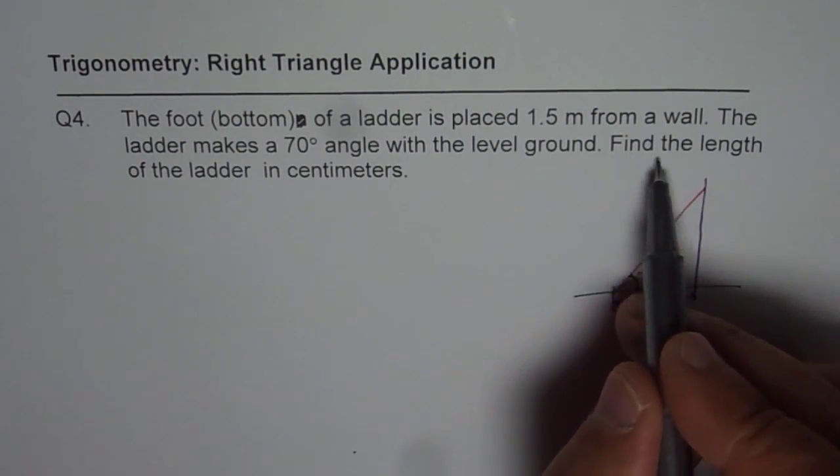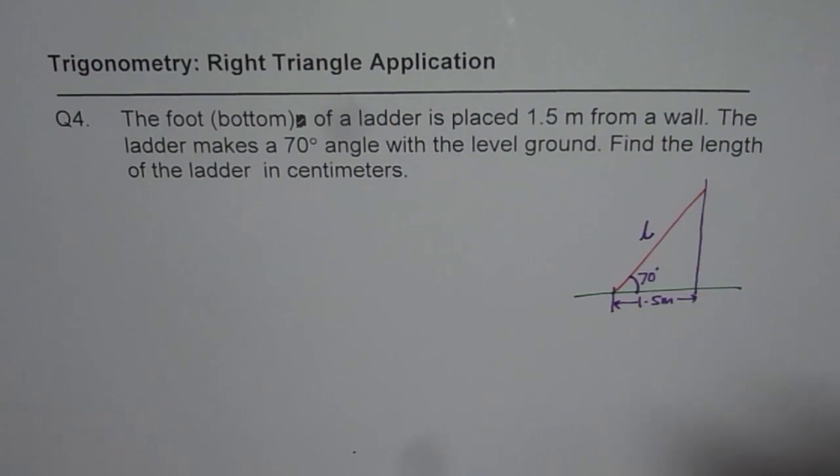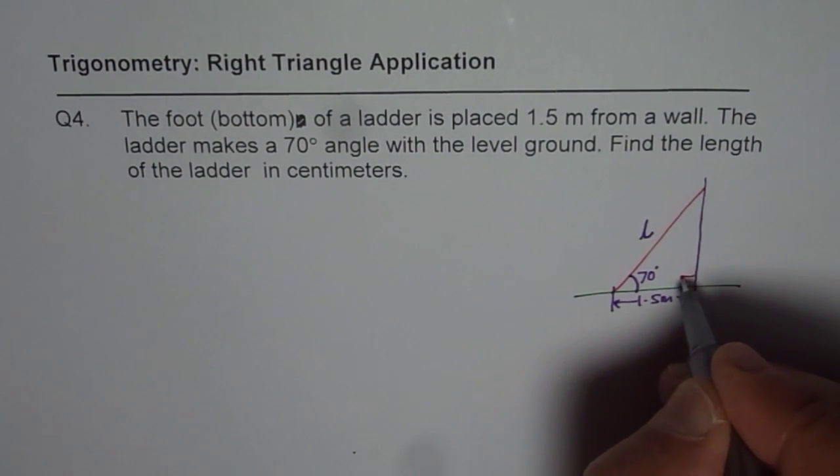Find the length of the ladder. So this is the length which we need to find. So that is how we can actually label our diagram. And as you know this is going to be 90 degrees. Wall is upright.